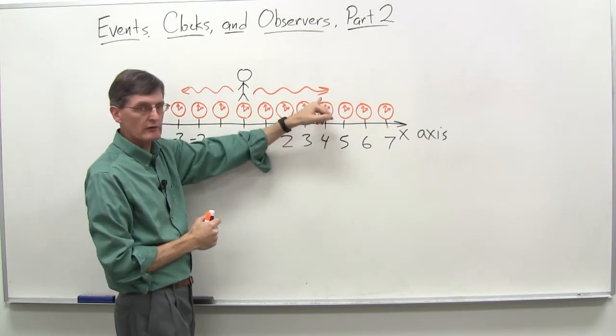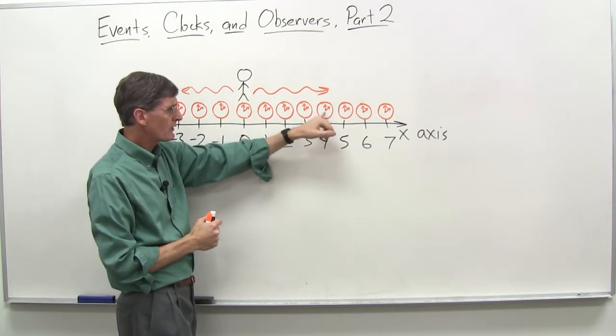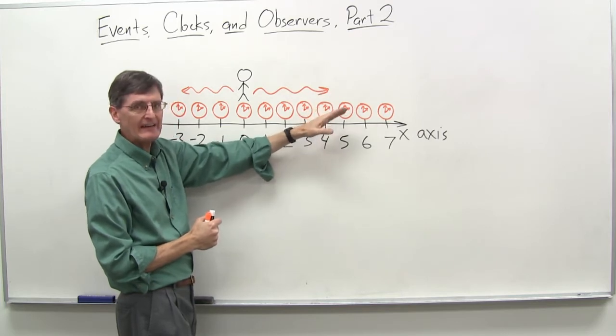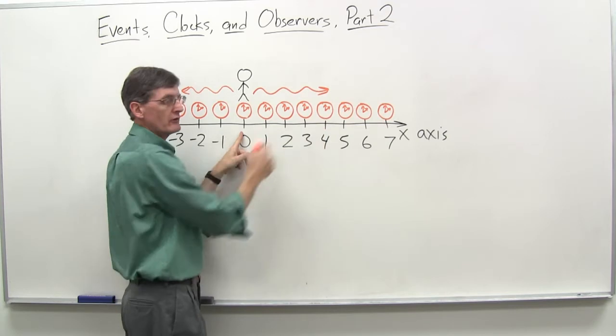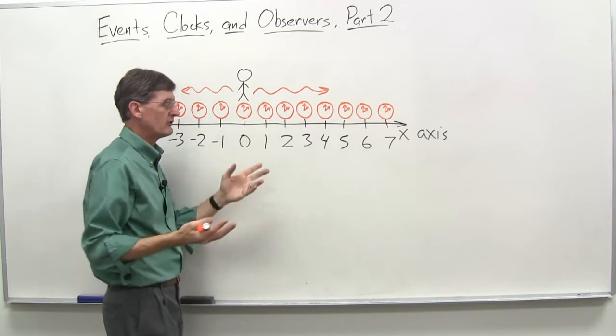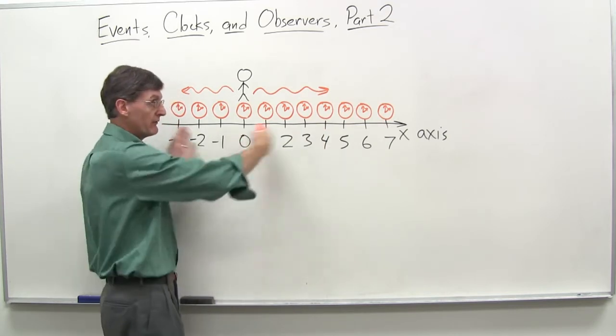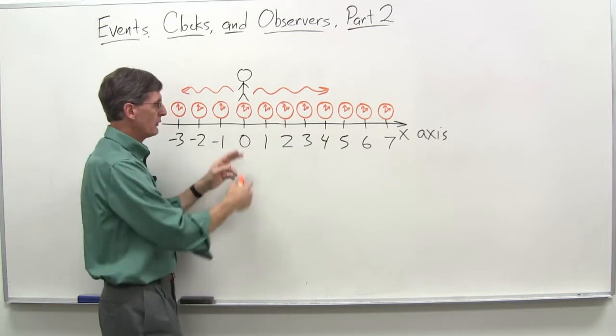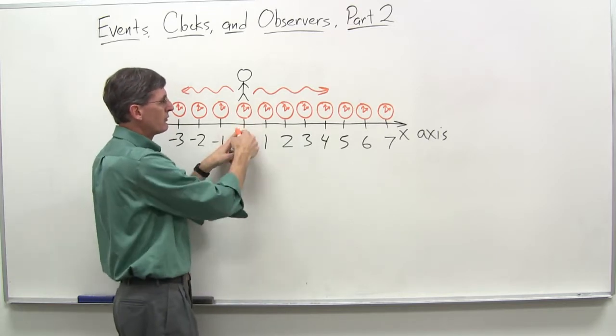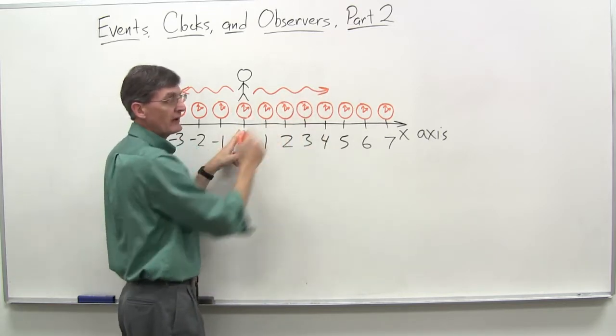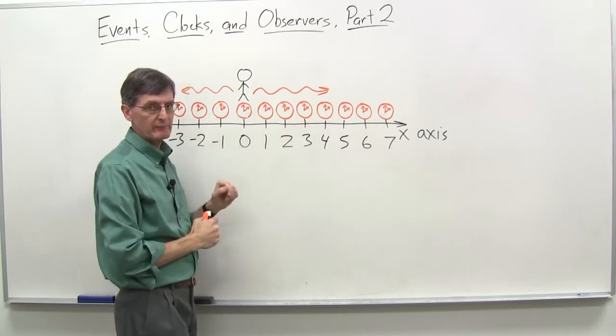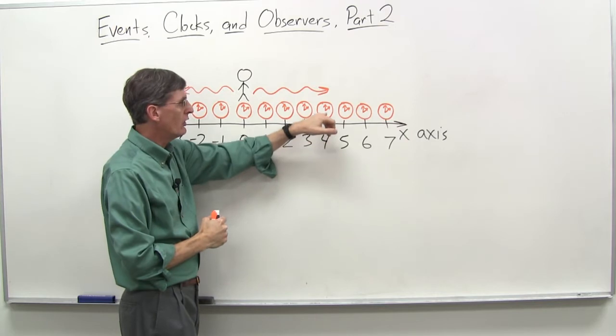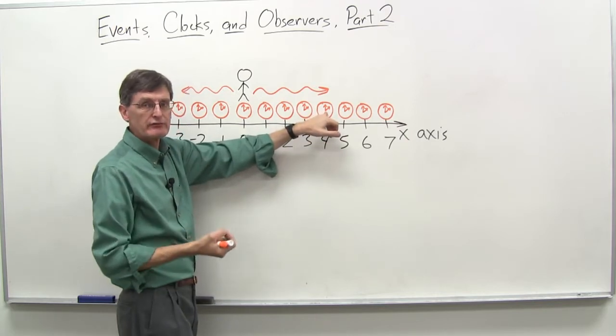So, we'll say, okay, clock number four here, clock at position four, we're going to set it ahead just the amount of time we know that the light pulse takes to get from zero to four. And let's just imagine it's three seconds. Okay? So, it's pretty far away here, obviously, at the speed of light. But we'll say, okay, we know that the light pulse, we know what this distance is, we know how fast the light will travel, and we know that it will take three seconds to get to that position there. And so, we will set this clock three seconds ahead.